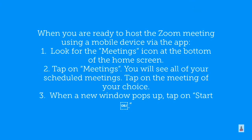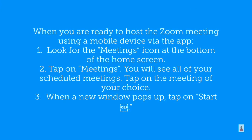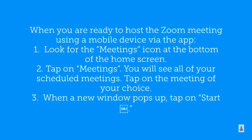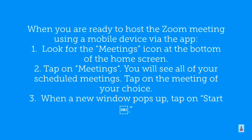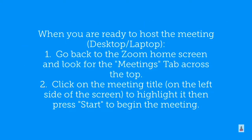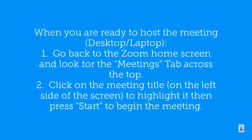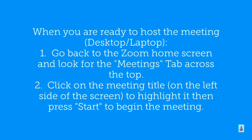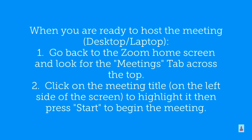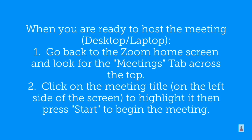When you're ready to host the meeting, look for the meetings icon at the bottom of the home screen. Tap on meetings, you'll see all of your scheduled meetings. Tap on the meeting of your choice, and when a new window pops up, tap on start. Using a desktop or laptop, go back to the Zoom home screen, look for the meetings tab across the top, click on the meeting title on the left side to highlight it, then press start to begin the meeting.